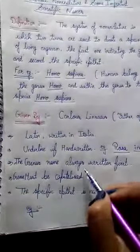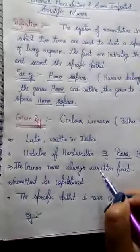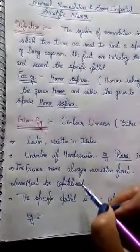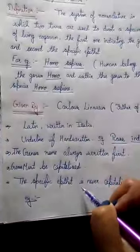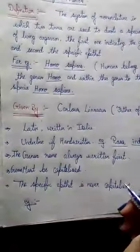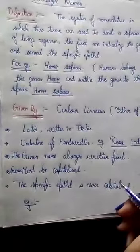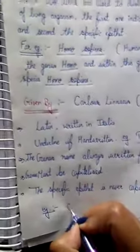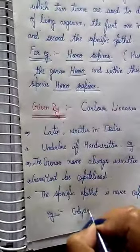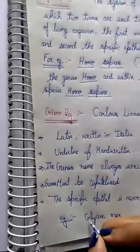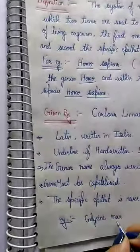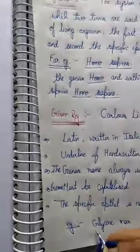The genus name is always written first, and the genus name must be capitalized — the first letter of the genus name is always written in capital. The species epithet is never capitalized; the species name is never written in capital letters. For example, for soybean, the scientific name is 'Glycine max' — you can see the genus name 'Glycine' has its first letter in capital, while the species 'max' is entirely in small letters, and we underline them separately.